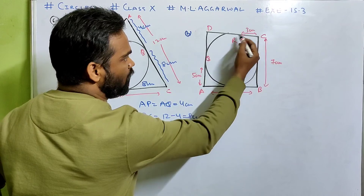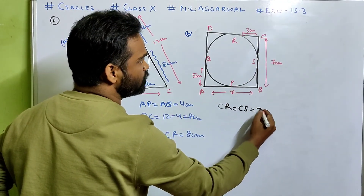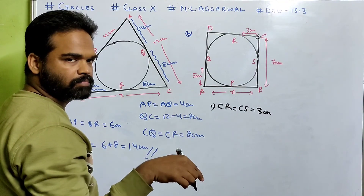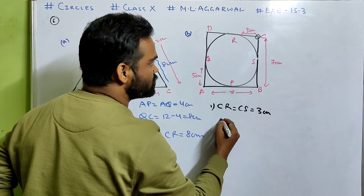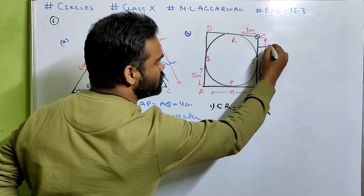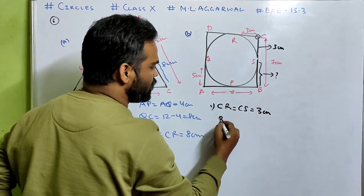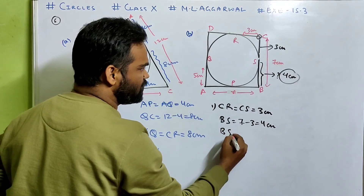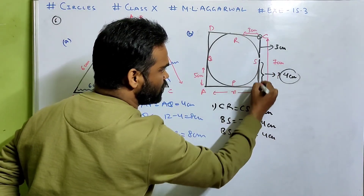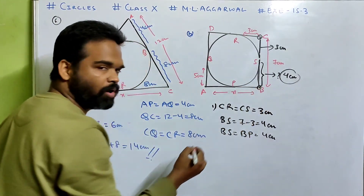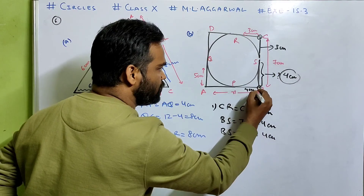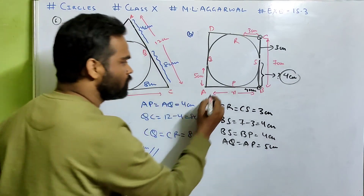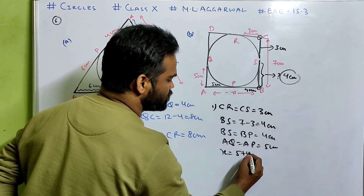For part B, the circle touches the four sides of the quadrilateral. From C: CR = CS = 3 cm. CB = 7 cm, so BS = CB − CS = 7 − 3 = 4 cm. From B: BS = BP = 4 cm — tangents from one external point are equal. From A: AQ = AP = 5 cm. Therefore X = AP + BP = 5 + 4 = 9 centimeters.